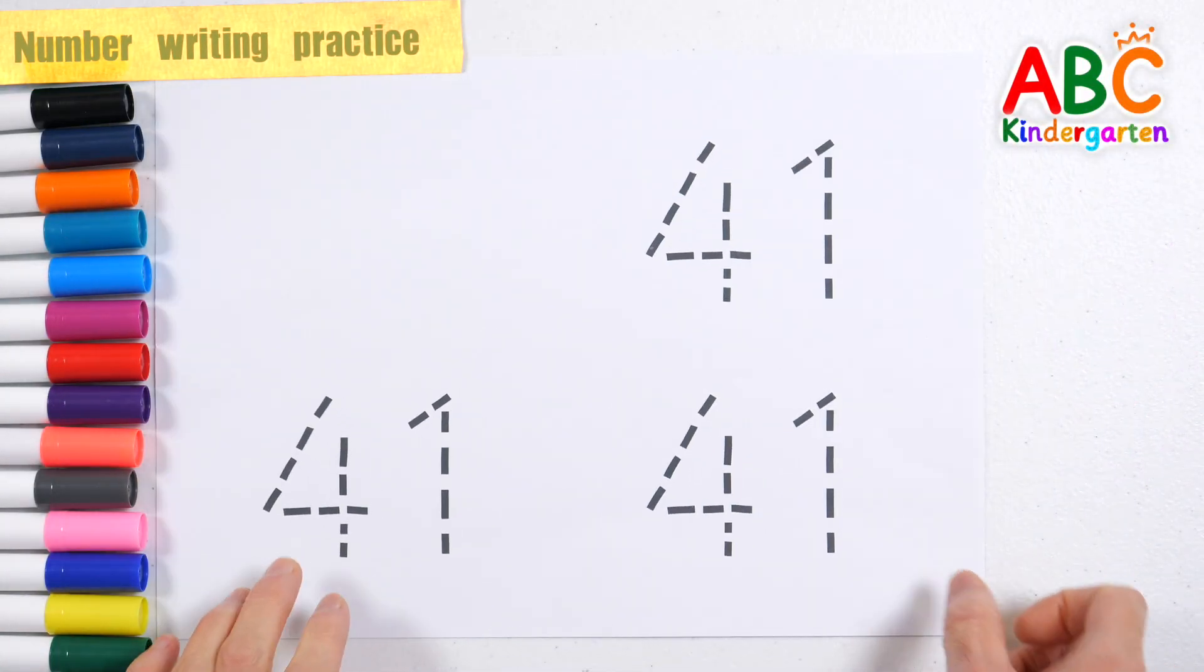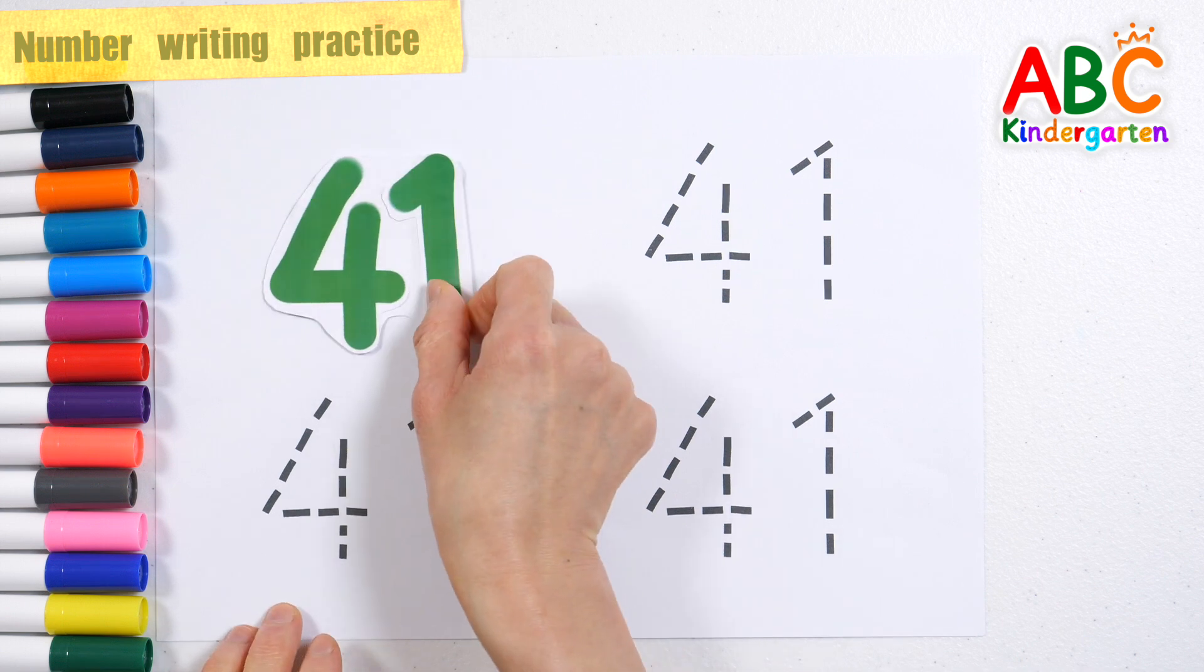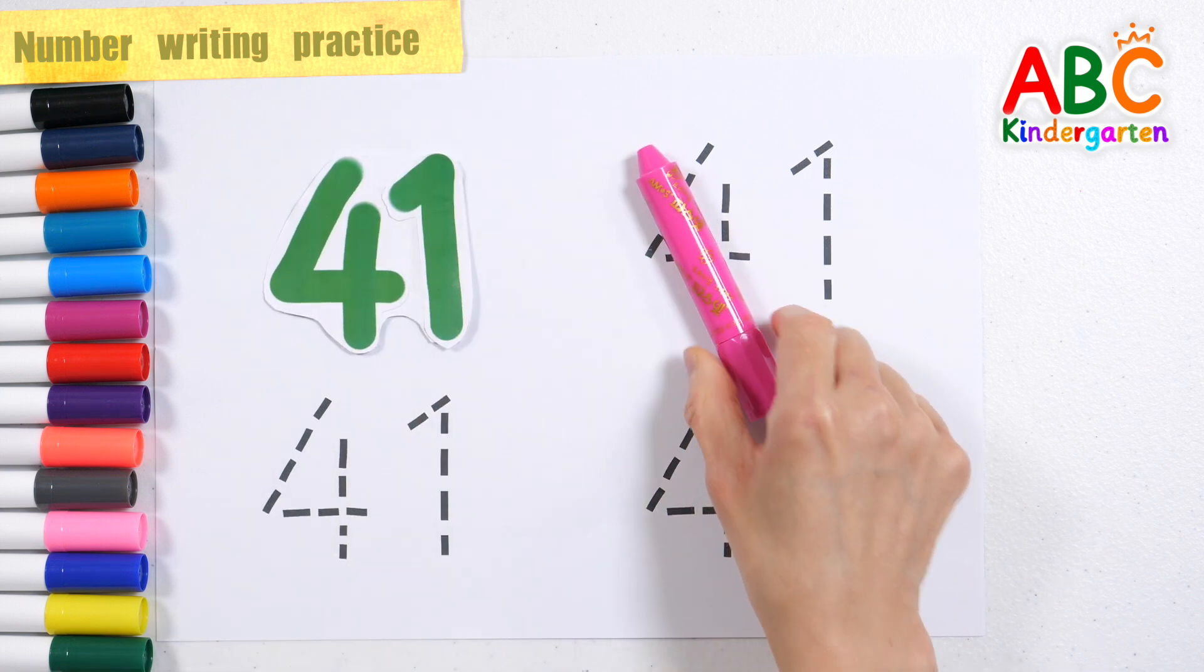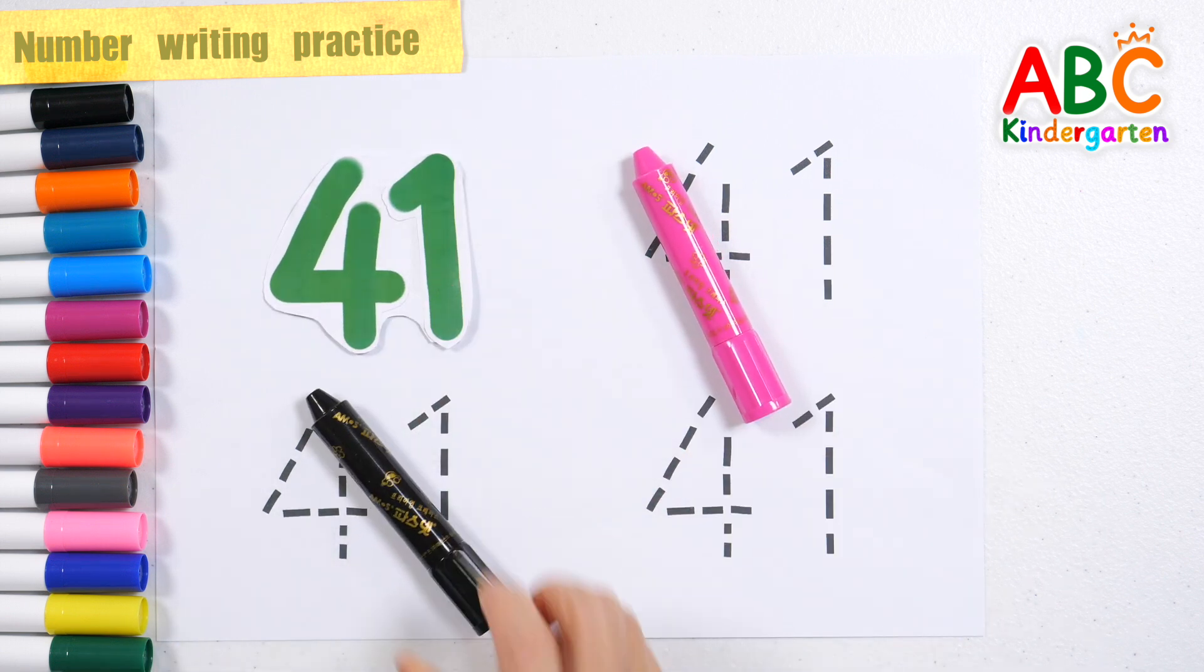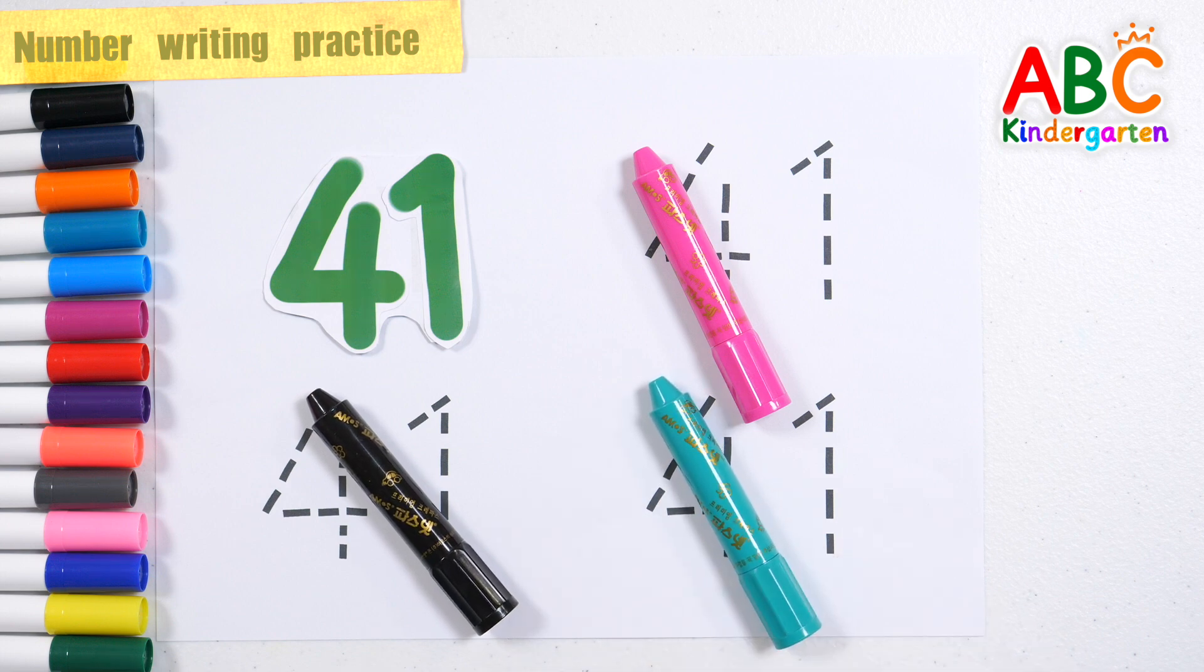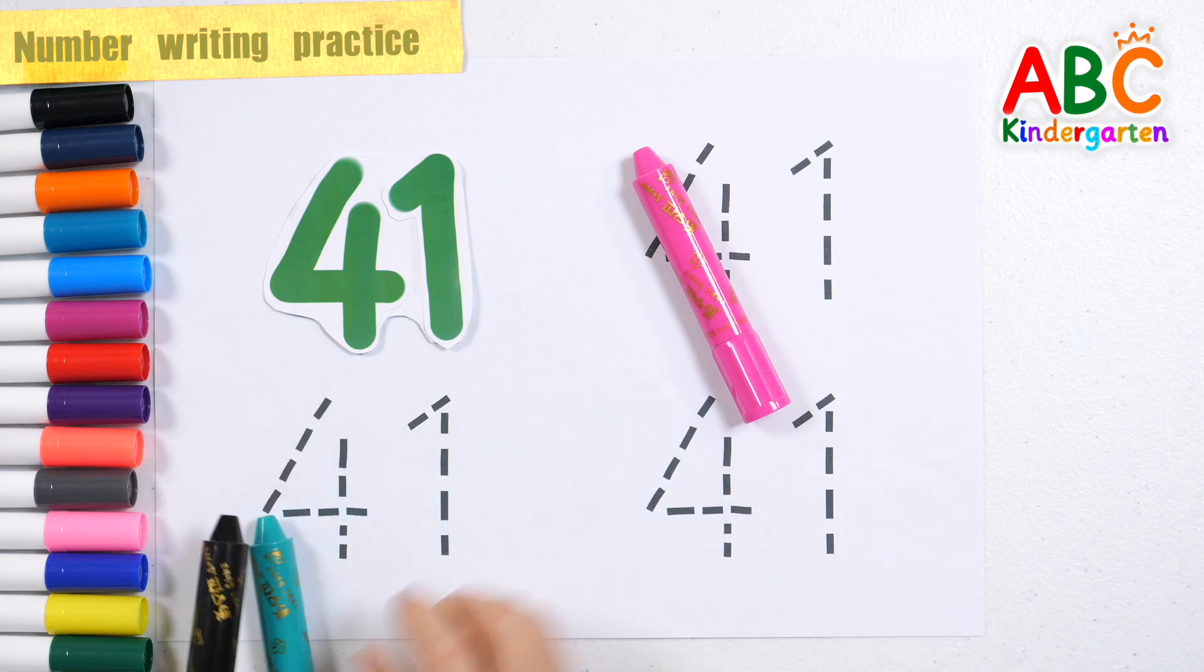Learn the number 41. How? Let's write the number 3 times along the dotted line using pink, black, and blue-green crayons.